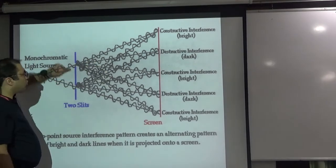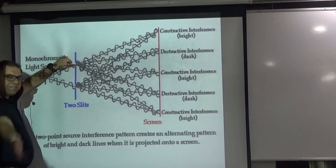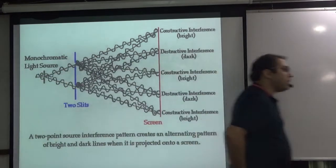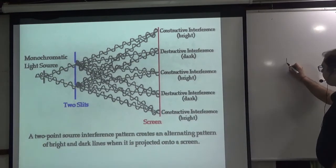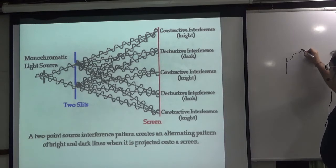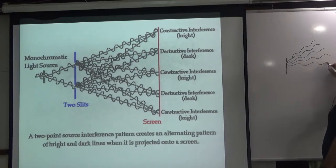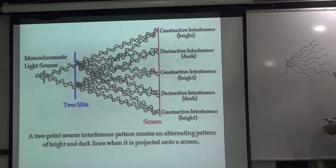First of all, it's a source of light. Light is being emitted in every direction. As I told you a little bit earlier, if light is emitted in every direction from a source, then you can show it in every direction — crest and trough, crest and trough, crest and trough — you can show it in every direction.